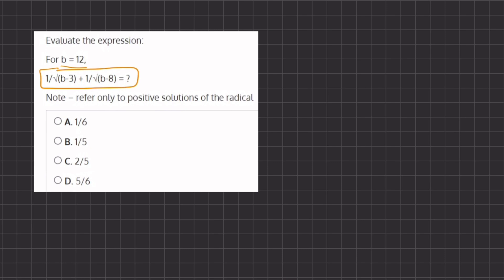So we first have a fraction, we have 1 divided by radical, and instead of b I'm going to be writing in 12 minus 3, plus another fraction, 1 divided by radical, 12 minus 8.